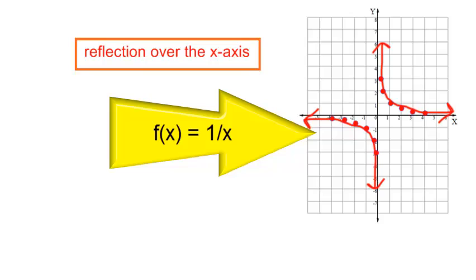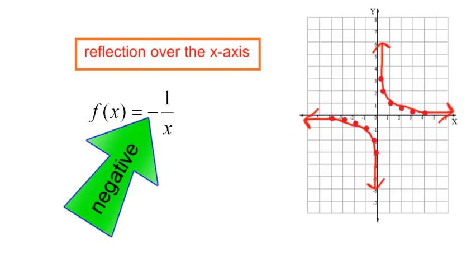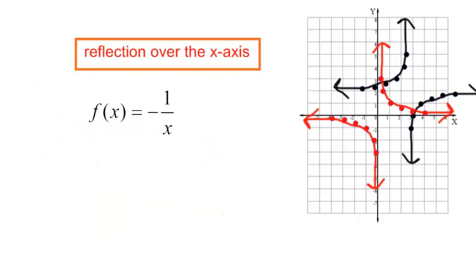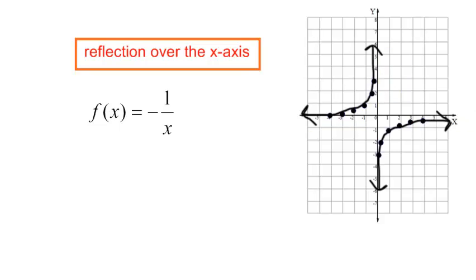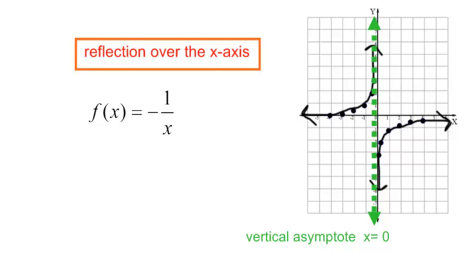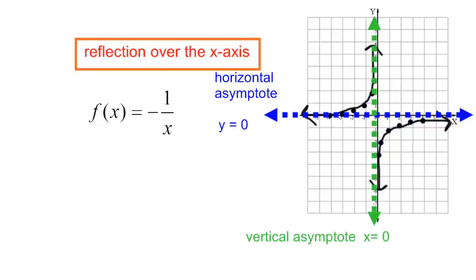Now we're going to talk about when we take this function 1 over x and reflect it over the x-axis. If I put a negative in front of the function, that will reflect it over the x-axis — it flips it across the x-axis. So now that is the graph f of x is equal to negative 1 over x. I still have a vertical asymptote at x equals 0 and a horizontal asymptote at y equals 0. My asymptotes did not change since I only reflected without shifting.